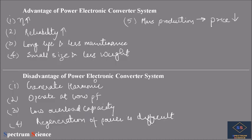Now let us look at the advantages of power electronic converter systems. First is increased efficiency due to low losses in power semiconductor devices. They are also highly reliable compared to conventional switches.